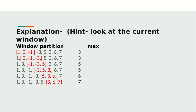As you can see from the explanation, this window is moving to the right, but at each step there's one element coming into the window from the back and one element going out from the front. Which data structure gives the flexibility of doing this? The answer is the deque data structure.